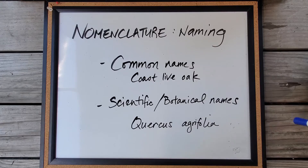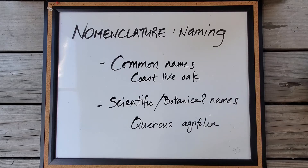The common name is an easily accessible name — most clients will know some kind of common name, and as long as there aren't very many common names for that species, you'll probably be on the same page. But, like in this example, if someone told me they had a scrub oak, I really don't know what that species is.